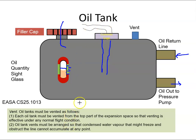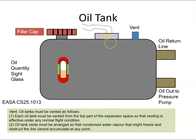The tank also needs to be vented. It is a requirement that the vent is located at the top part of the expansion space so that venting is effective under any normal flight condition. Additionally, the oil tank vents must be arranged so that condensed water vapor that might freeze and obstruct the line cannot accumulate at any point.